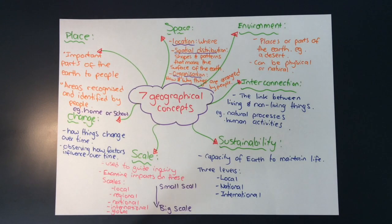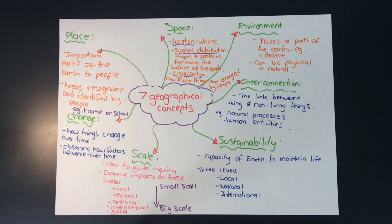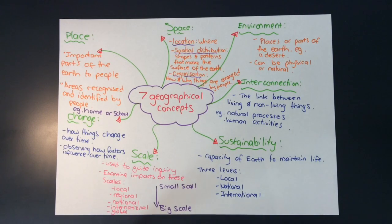Interconnection just refers to the links between living and non-living things. They might be natural processes and human activities and how they are interconnected. For example, how the water cycle impacts on human activities, or the growth of animals or the amount of animals in an area.